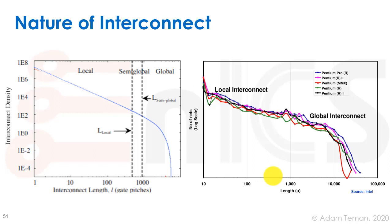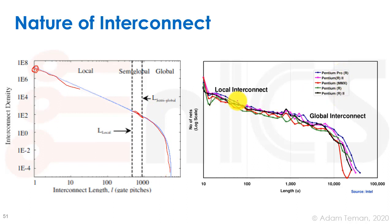Most wires are small, just connecting a few gates, but there are longer wires too. Looking at histograms of wire length on the x-axis versus frequency, we see many short wires and fewer but still significant longer ones — semi-globals and global wires. Across several generations of Intel processors, the spread of wire lengths looks similar despite scaling, because long global wires are proportional to die size, which stayed the same or grew. We don't have many global interconnects, but we do have them, and they don't scale well.